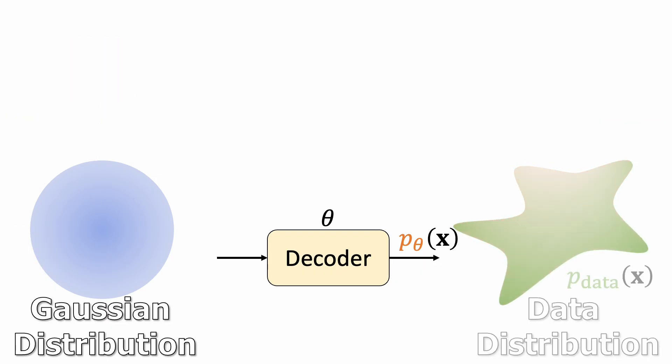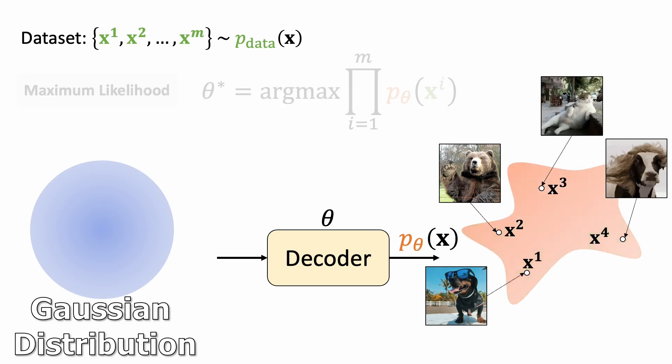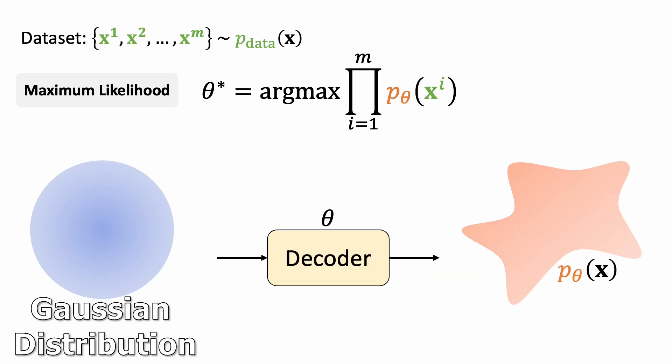However, we do not know what the true data distribution is and can only approximate it by collecting lots of data samples. Our training goal is maximizing the sample probability, known as maximum likelihood.